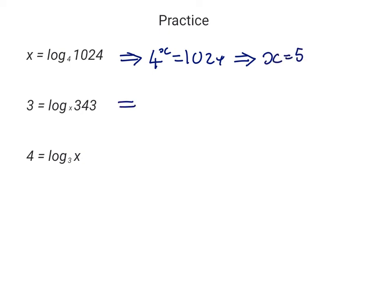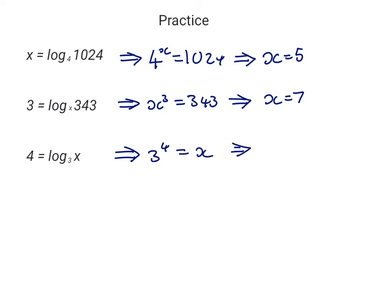This question, we end up with X cubed equals 343. So we want to know what number multiplied by itself 3 times equals 343, and that's 7. And this one here, we're going to have 3 to the power of 4 equals X. We can simply do that on the calculator, and we get the answer 81.